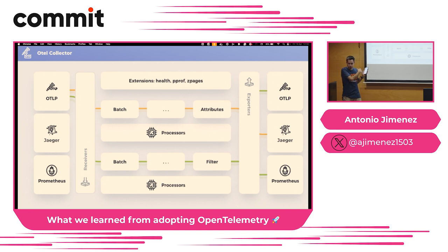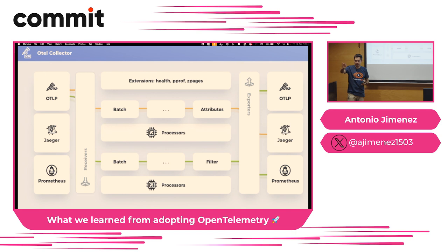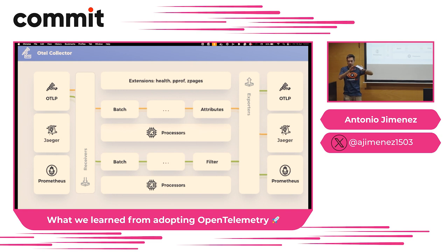The exporter works the same as the receiver — we can export data in different formats and to different observability backends. The most famous is the OTLP exporter with gRPC or HTTP protocols, but you can also have Jaeger, Prometheus, or even send to a database. There are also extensions, which are components general to all your pipeline, like the health check or the PPROF extension and many more.